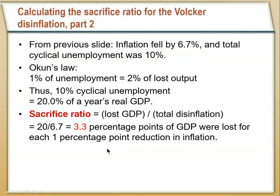Inflation went down by about 6.7% over this time, and the total sum of cyclical unemployment for these four years was 10%. From Okun's law, 1% of unemployment is equal to about 2% of lost GDP. So cyclical unemployment of 10% means we sacrificed 20% of GDP. To get the sacrifice ratio, we divide that lost GDP by how much we brought inflation down — and in the case of the Volcker disinflation, the sacrifice ratio was actually 3.3.